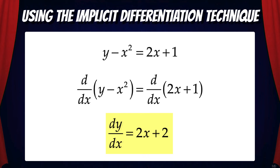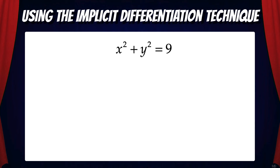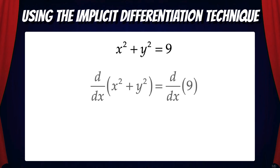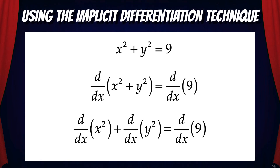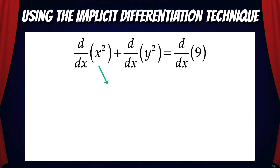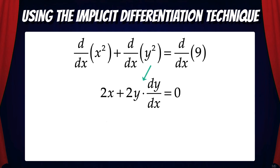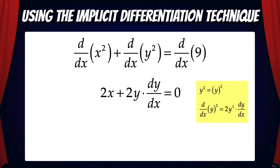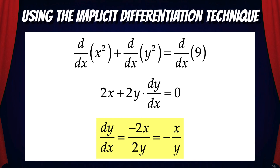So let's apply that same technique to the relation x squared plus y squared equals 9. First, we take the derivative with respect to x on both sides: d/dx of x squared plus y squared equals d/dx of 9. d/dx of x squared equals 2x. d/dx of y squared equals 2y times dy/dx by the chain rule — this is the tricky part. We've treated y as a function of x, so y squared is like the quantity y squared, and its derivative is 2y to the first power times dy/dx. d/dx of 9 is just 0. Solving for dy/dx gives us dy/dx equals negative x over y.